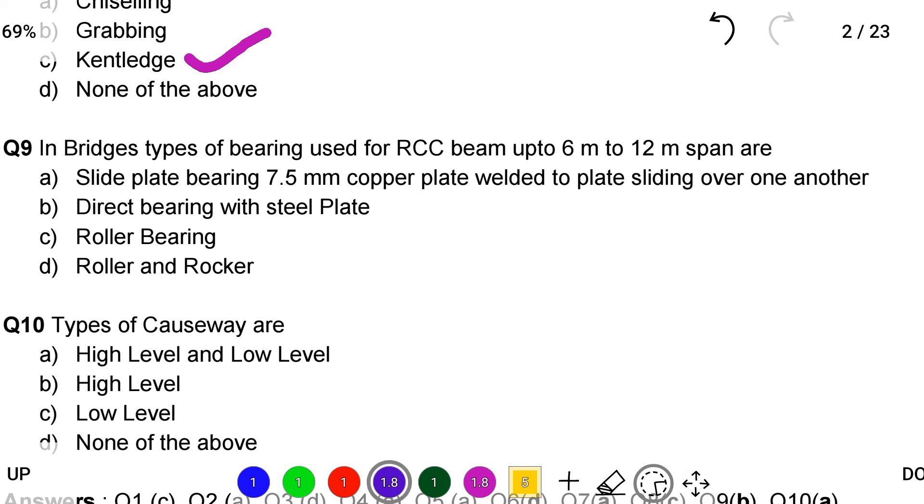option D roller and rocker. So the correct answer is option B direct bearing with steel plate.